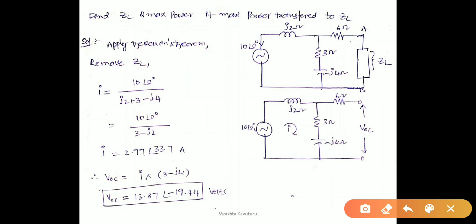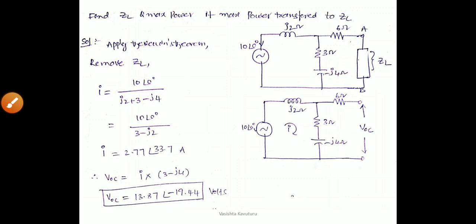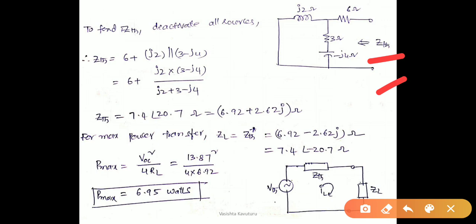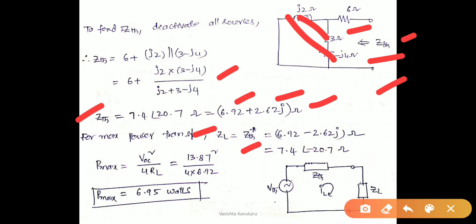To calculate the Thevenin impedance, we deactivate the sources — the voltage source is short-circuited. Looking from the load side, the two elements are in parallel and that combination is in series with 6 ohms. Therefore ZTH = 7.48 ∠20.7° Ω, or in rectangular form: 6.92 + j2.62 Ω. As per the maximum power transfer theorem, ZL = ZTH* = 6.92 − j2.62 Ω. The maximum power is Pm = VOC² / (4RL) = 6.95 W.